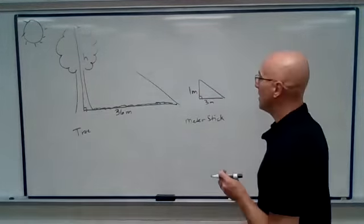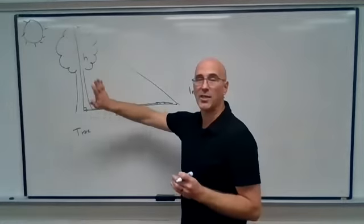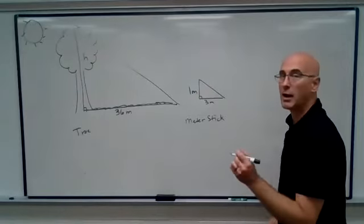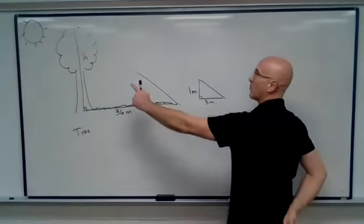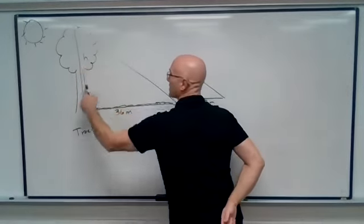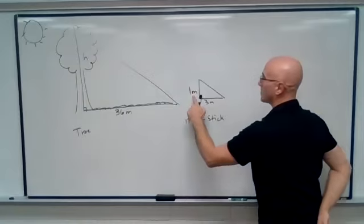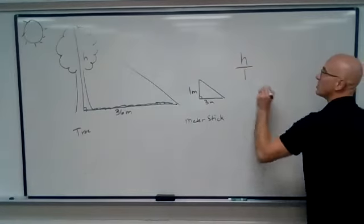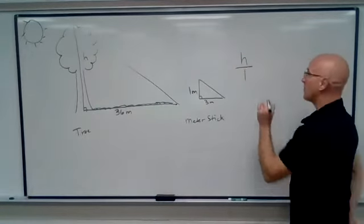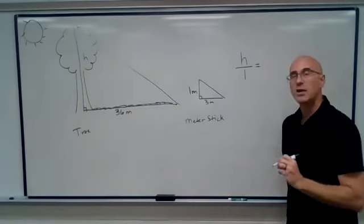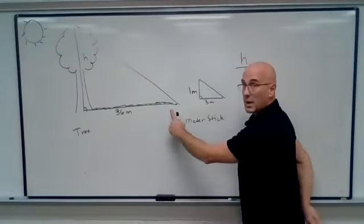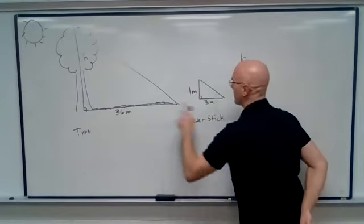Watch how this works. I'm going to compare the big triangle to the little triangle. So here is my proportion. I am going to say, I'm trying to find this length H corresponds to the one meter here. So H to one, and it's a proportion that is going to be equal to the length of the shadow of the big triangle, 36 to three.